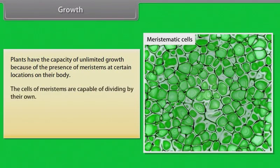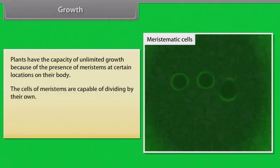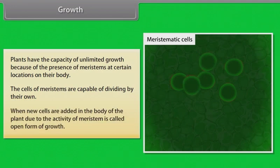The cells of meristems are capable of dividing by their own. When new cells are added in the body of the plant due to the activity of meristem, it is called open form of growth.